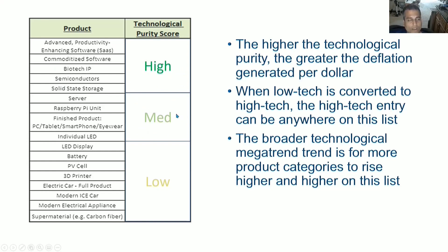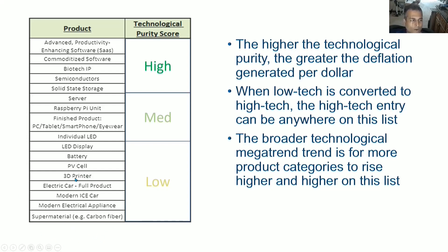Medium technological purity products have more hardware components and certain low-tech elements wrapped around the high-tech core — such as a server, a Raspberry Pi unit, a finished PC, tablet, or smartphone, or an individual LED. Low technological purity products still have some exponentiality, but as we get to the bottom of the list it is no longer high tech at all.